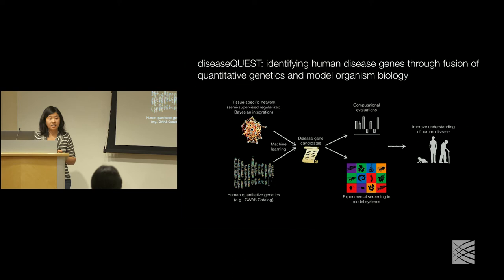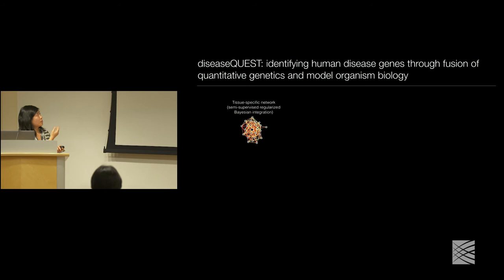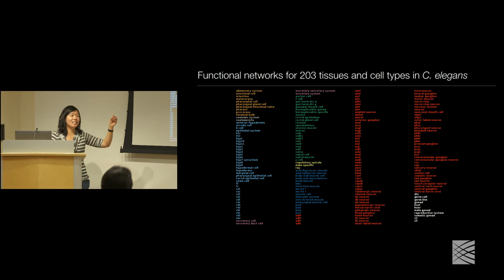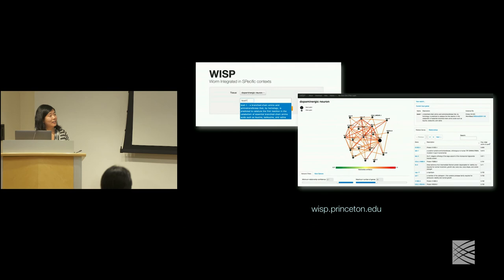As a proof of principle, we applied Disease Quest to C. elegans and made 203 tissue and cell type networks in C. elegans, colored by their tissue system. You see many single neuron cell types like AVA, ALM — these are neuron cell types named in the C. elegans convention. We have a web interface where these networks are available for people to query and look at what genes are related to each other in the different tissue networks.